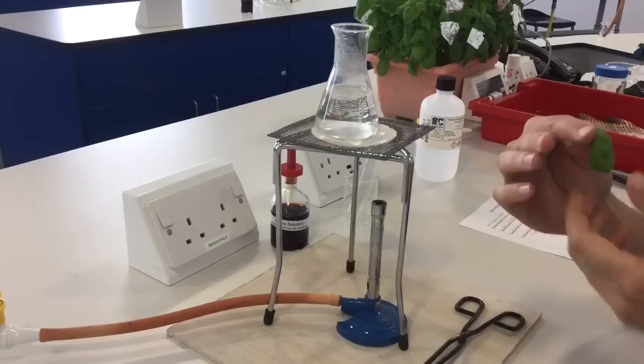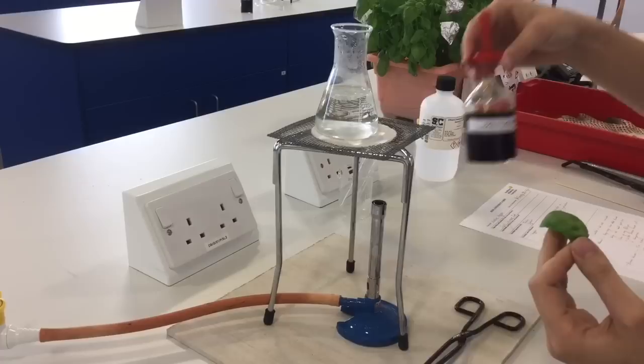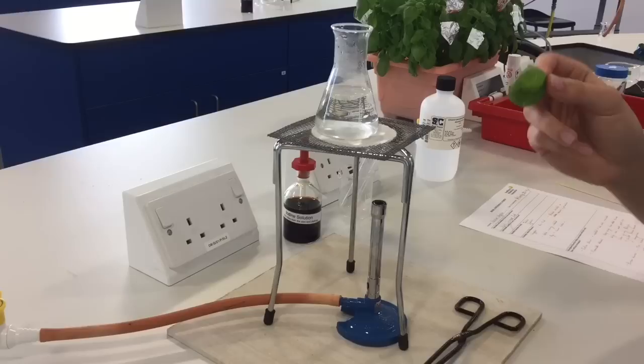The first thing we need to do is soften our leaf. The cells aren't very permeable, which means they don't allow a lot of the iodine solution to get in if you just put it on straight like this.